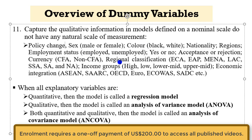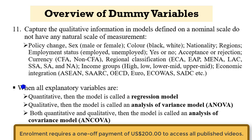When all the explanatory variables are quantitative, the model is called a regression model. If they are all qualitative, then the model is called an analysis of variance model, popularly called ANOVA. If both quantitative and qualitative, then the model is called an analysis of covariance model, known as ANCOVA.